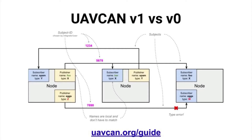The main benefit of UAVCAN V1 over V0 is the introduction of subject IDs. Subject IDs are functionally similar to topics found in most other publish-subscribe technologies like ROS and DDS, with a critical difference: instead of a textual name, subjects are identified by a numeric identifier. Unlike V0 with its hard linkage between data types and their semantics, this new approach enables service-oriented architectures commonly found in the field of general information technology.